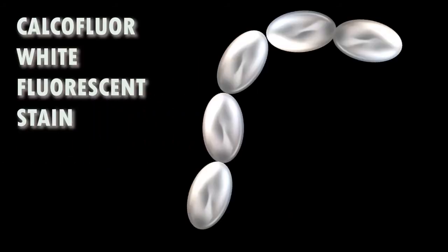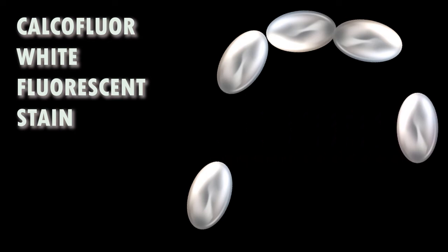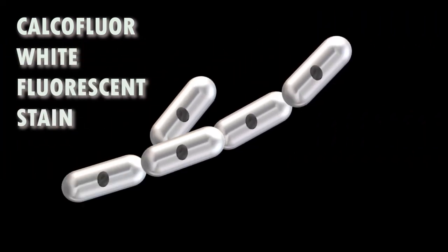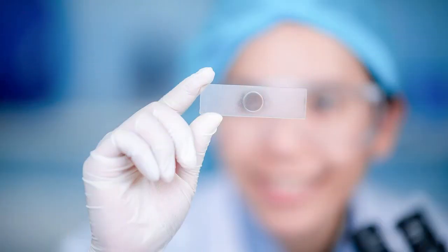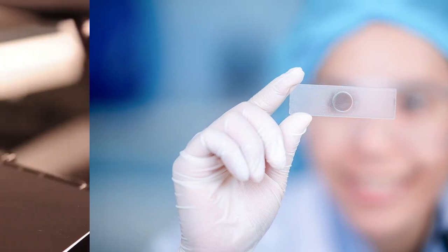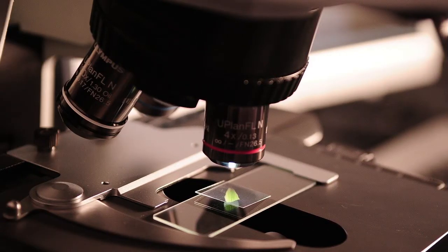Fluorescent stains. Auramine and Rhodamine are fluorochromes used for identification of Mycobacterium tuberculosis. Calcofluor white is a nonspecific fluorochrome used for identification of fungi including yeast cells, hyphae, and pseudohyphae. Special stains for flagella, spores, and capsules are used for identification of microorganisms if required. Hanging drop method is used to identify Vibrio cholerae by their motility in stat stool samples.